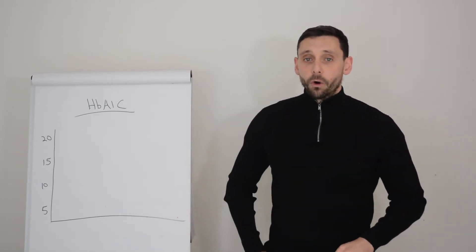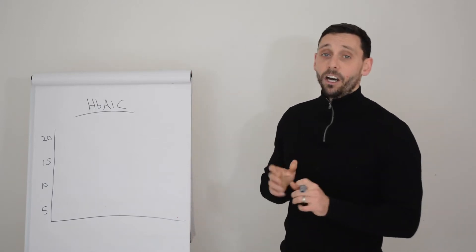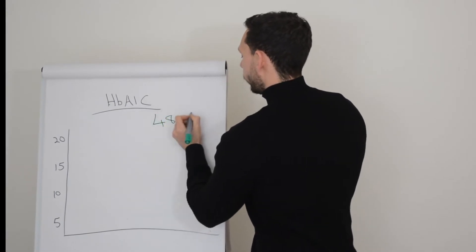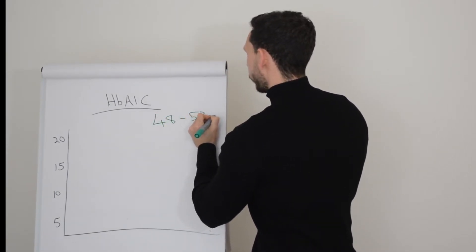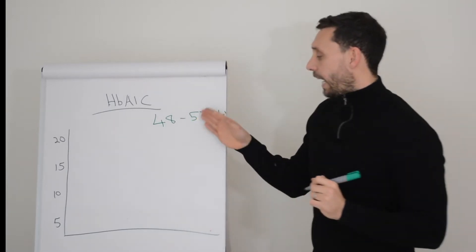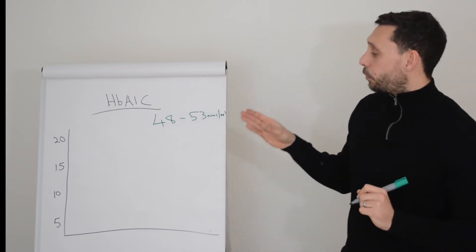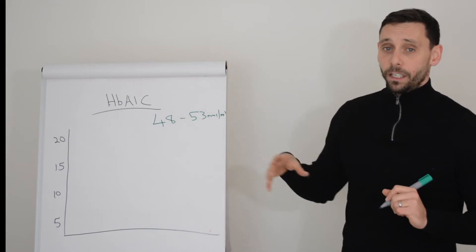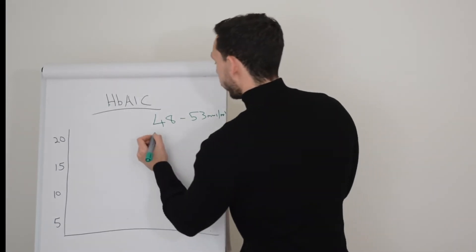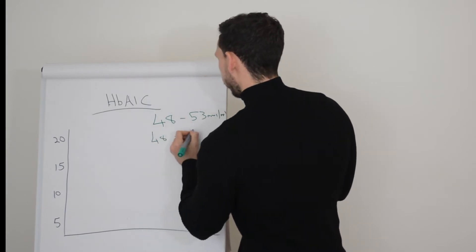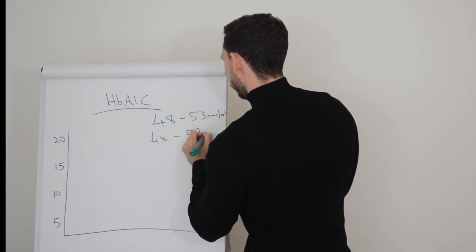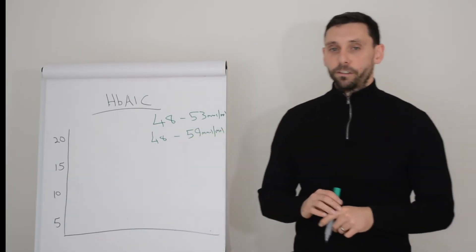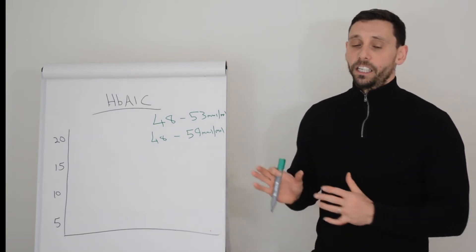So the target for type 1 diabetes care in an ideal gold standard way is to achieve a result of 48 to 53 millimoles per mole. That is a really good place to be aiming. Not many people reach this in fairness, and it's very hard to keep it that tight and that consistent. So actually we can open up that target and say anyone between 48 and 58 or 59 is also doing really well. Actually, if I saw someone in clinic who came in with a HbA1c of 58 or 59, I probably wouldn't bat too much of an eyelid. I think they're still doing great.